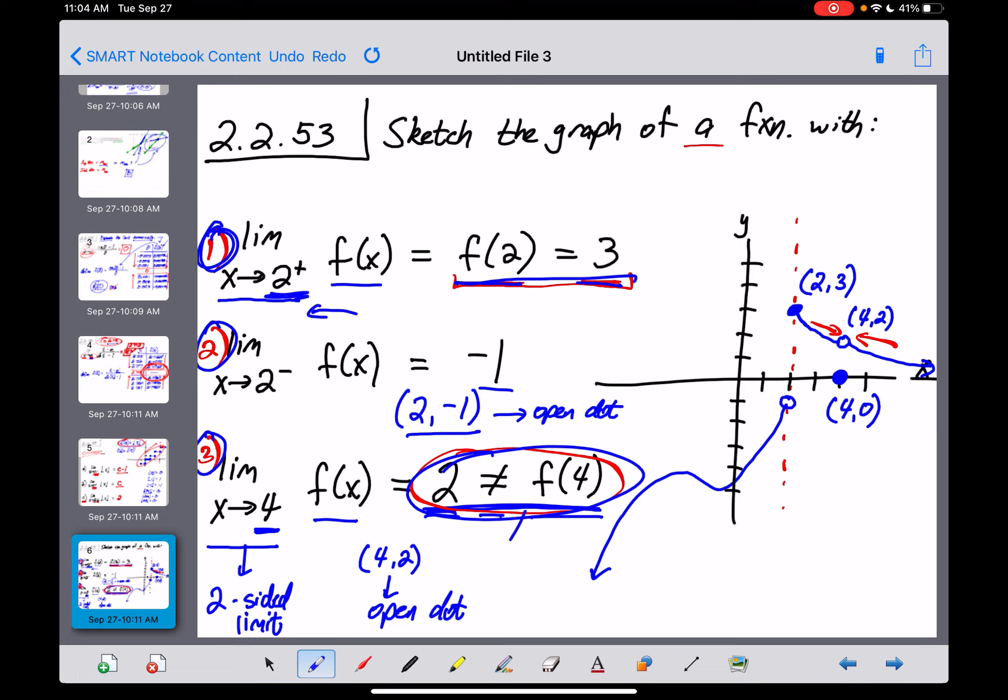So whether you put that solid dot there or not, whether you just leave it as an open dot at (4, 2), that covers the fact that f of 4 is not equal to 2, even though the limit as x approaches 4 of f of x is 2.